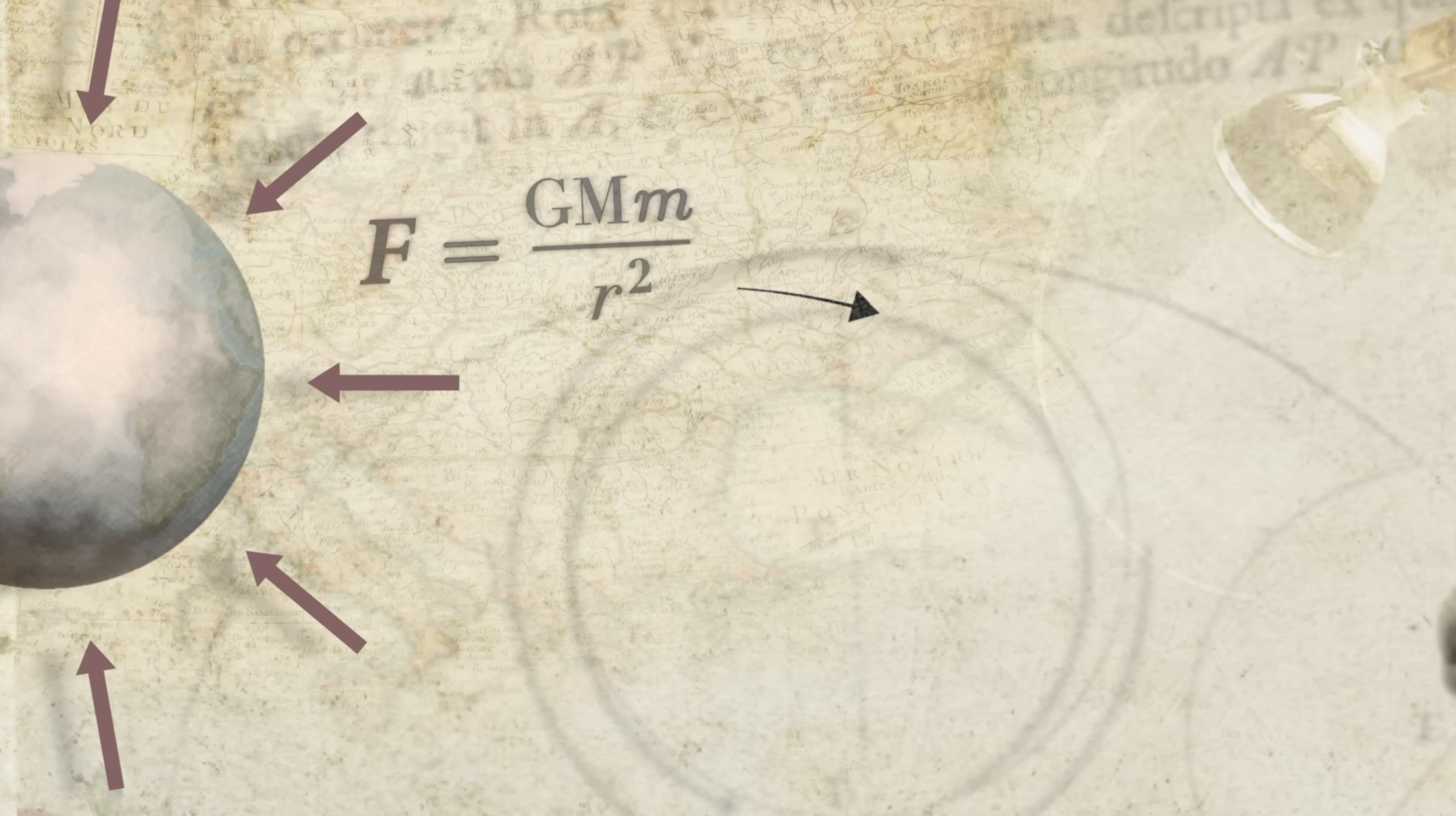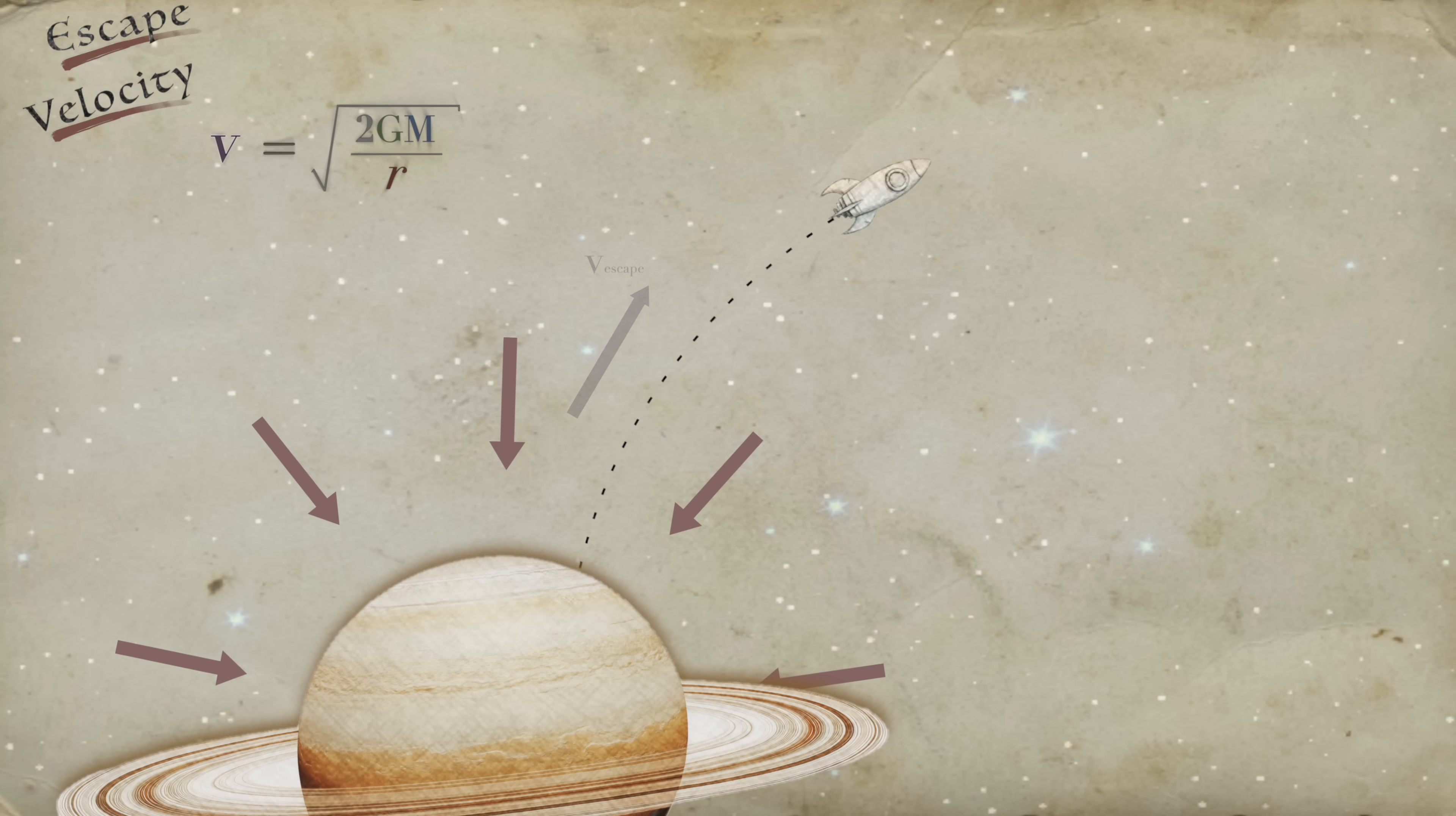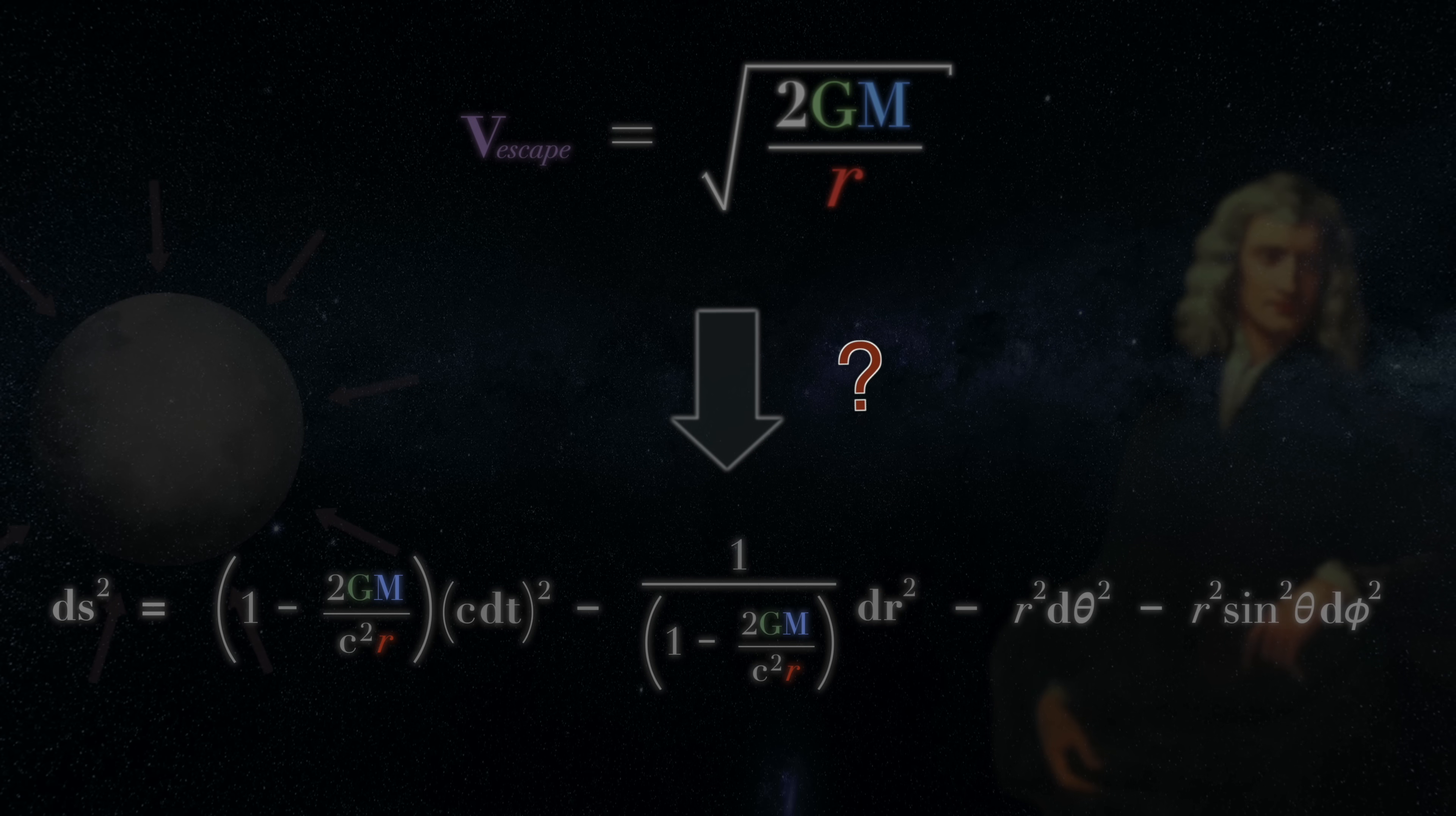As it happens, this velocity expression corresponds to what's called escape velocity, the velocity at which you'd have to outwardly launch an object in order for it to completely escape the gravitational pull of a given body of mass. Now this is very strange. Escape velocity is derived from the classical expression for gravitational force. So, what is it doing lodged in the heart of a fully relativistic solution to Einstein's equation?